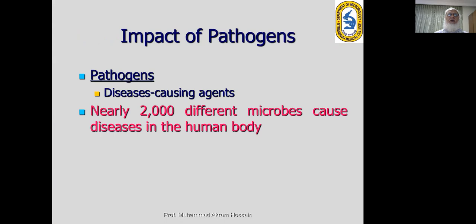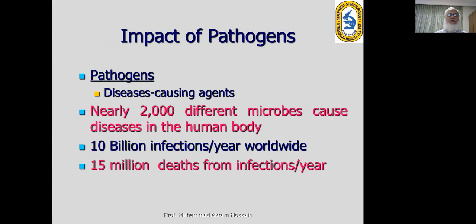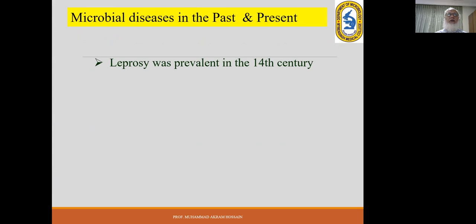Microbes, disease, and history. Pathogens cause disease — there are more than 2,000 different microbes that cause disease in the human body. In a year, 10 billion infections occur, of which 15 million result in death.